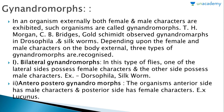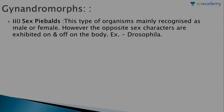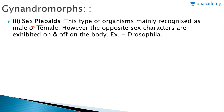In some organisms, both female and male characters are externally exhibited; such organisms are called gynandomorphs. Morgan, C.B. Bridges, and Goldschmidt observed gynandomorphs in Drosophila and silkworms. Three types are recognized: bilateral gynandomorphs (one lateral side female, the other male, e.g., Drosophila and silkworm), anterior-posterior gynandomorphs (anterior side male, posterior side female, e.g., Lucanus), and mosaic gynandomorphs where male or female characters appear on and off on the body.